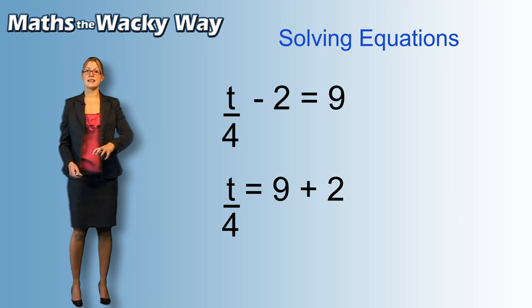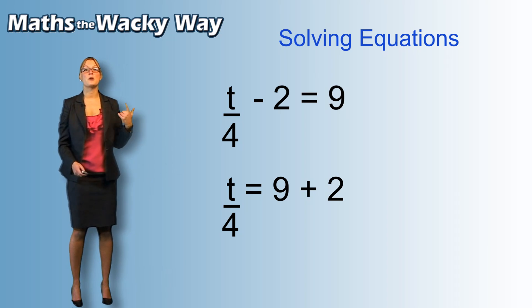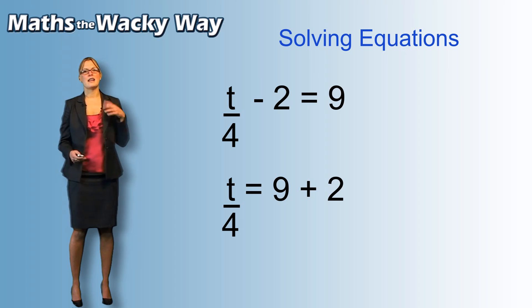So, 2 was subtracting, he's going to go to the other side and become a positive. So we're going to end up with 9 plus 2 on the other side, 2's joined the back of the queue.